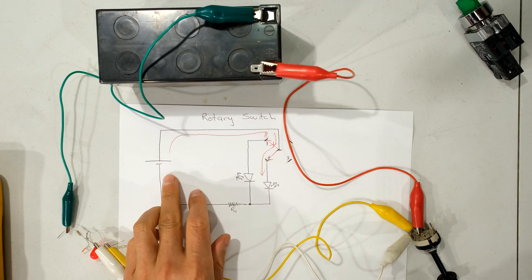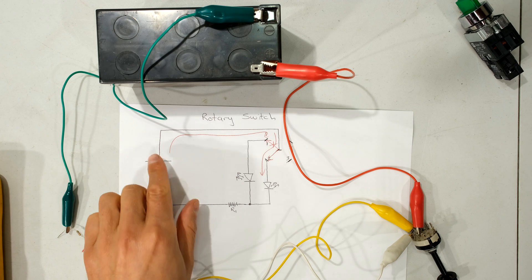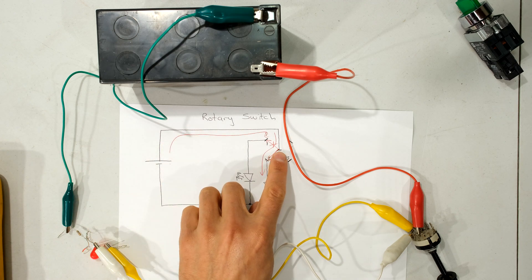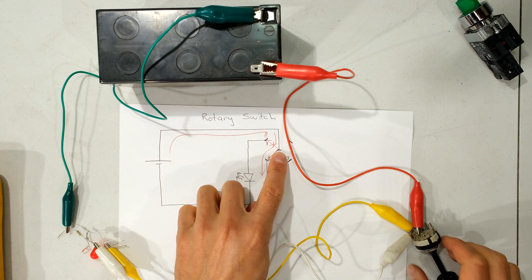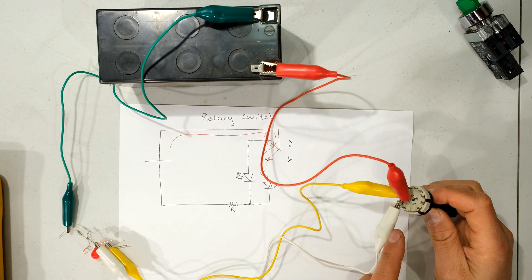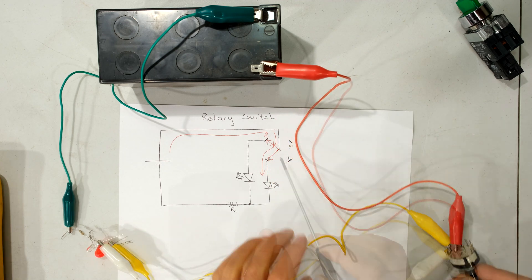Now just like I have in the diagram, I've got a battery. Here's my battery. The output of my battery is going to the input of my rotary switch. So you can see this red wire is going to pin A of my rotary switch, and then I have two outputs.